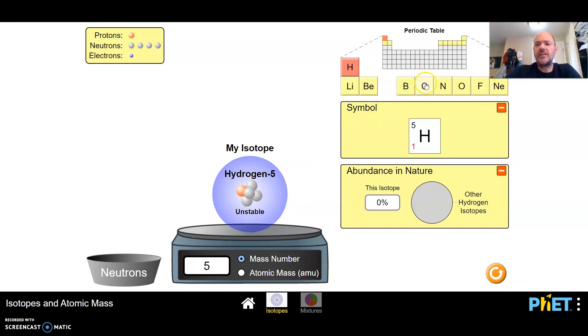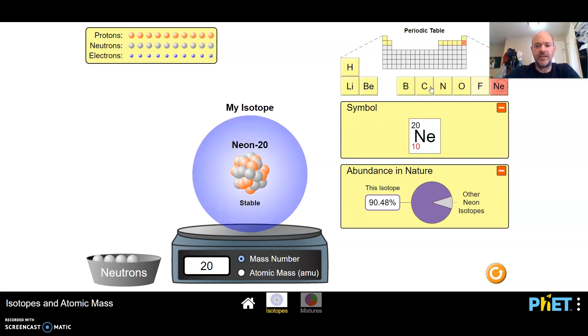You can also come up here and click on different elements. So I might look at neon right here. So when you get to neon you can take neutrons out if you want. I'm just going to take them out like this.